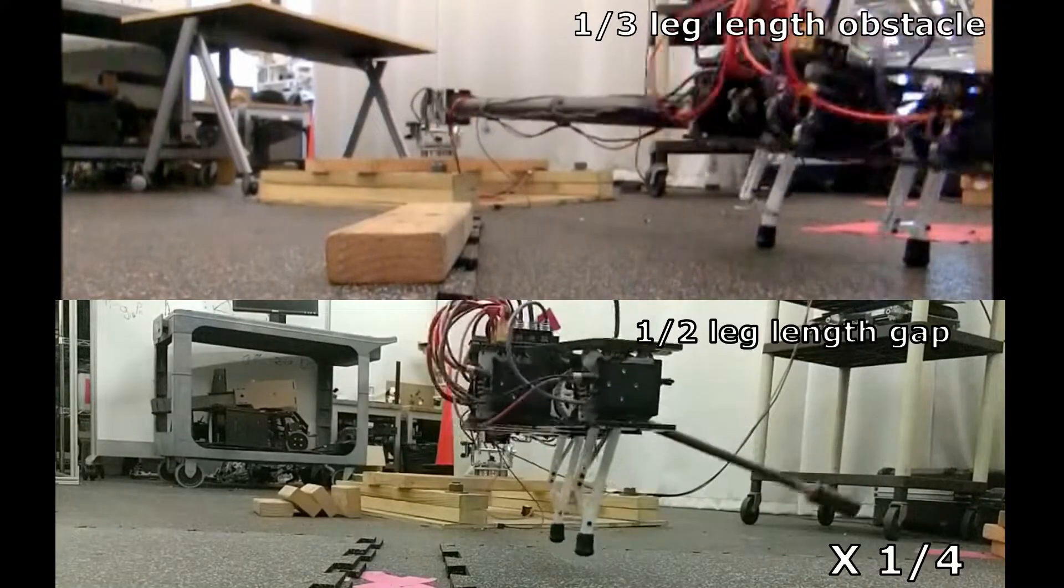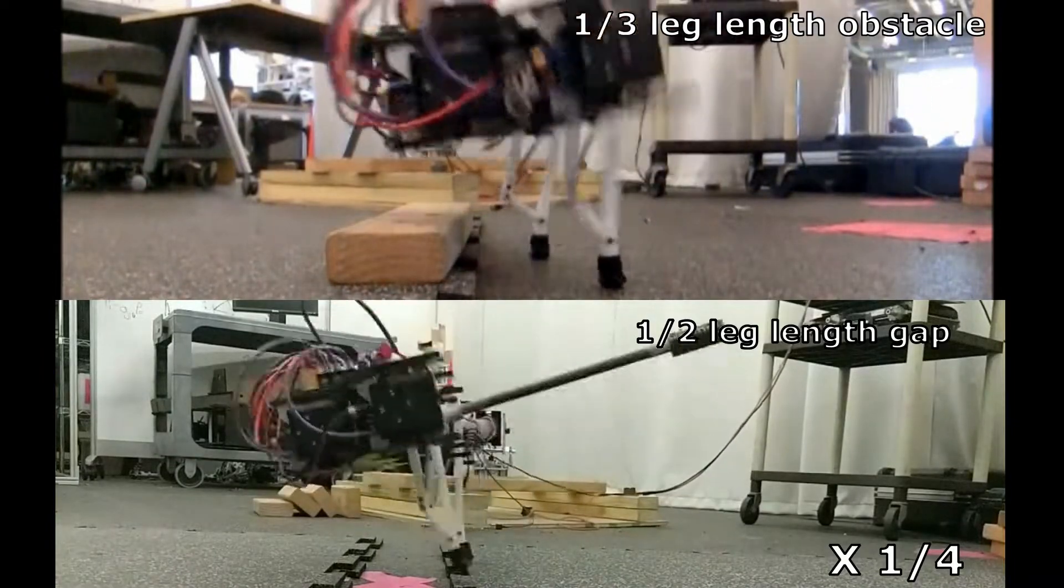The ability to control both speed and hopping height allowed Jerboa to jump over obstacles and gaps.